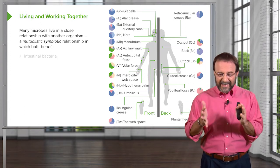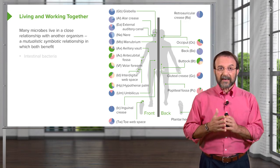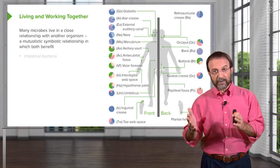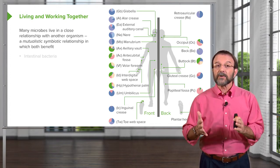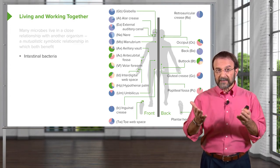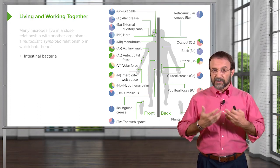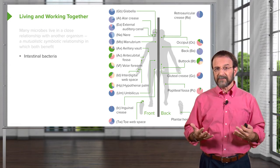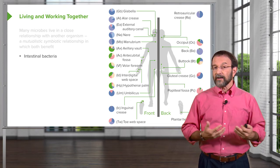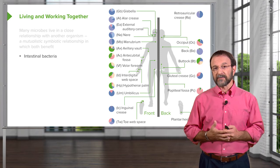Many microbes live in a close relationship with another organism. We call that a symbiotic relationship. And when both the microbe and the other organism benefit, we call it a mutualistic symbiotic relationship. An example is the bacteria in our intestines. We provide those trillions of bacteria with a place to live and some nutrients, and in turn they give us nutrients in exchange. They help our immune system develop, and they provide countless other benefits as well.